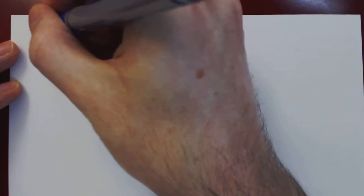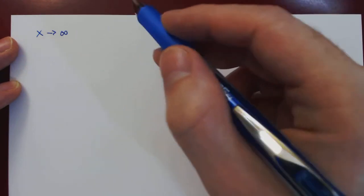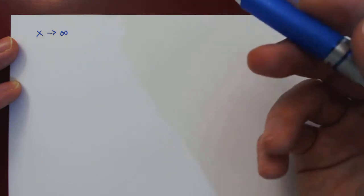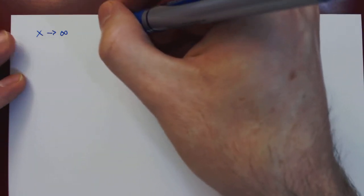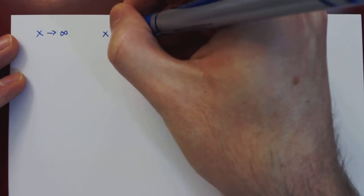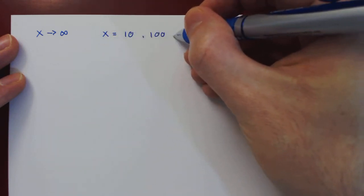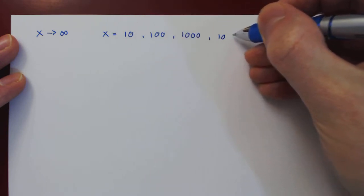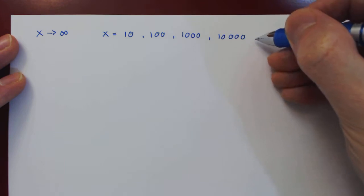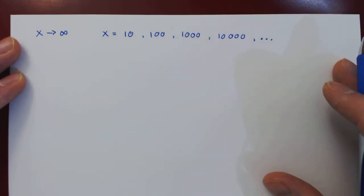We write and say that x approaches positive infinity to mean that x is taking on arbitrarily large values. In other words, there is no bound to how large x can be. So for example, x could be 10, then 100, then 1000, then 10,000, and so on. So x can grow as large as you want.